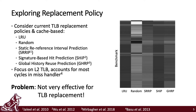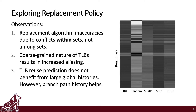Surprisingly, even random replacement maintains hotter entries in the TLB compared to LRU. By applying these predictive replacement policies, we have made the following observations. First, the replacement algorithm inaccuracies seem to be due to conflicts within sets, not among sets. A TLB entry may experience many hits from one or more PCs mapping to the same entry before it is eventually evicted, due to the large range of unique addresses mapped to the same entry compared to cache. This follows to the second observation: the coarse-grained nature of TLBs results in increased aliasing, causing prediction counters of policies to saturate too quickly, rendering the predictors ineffective.